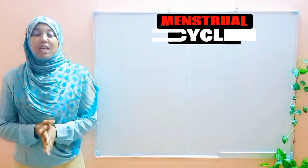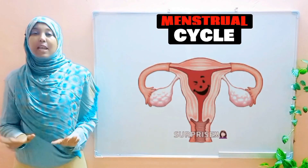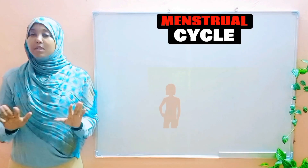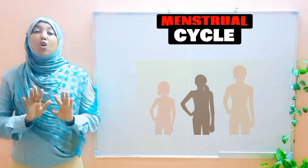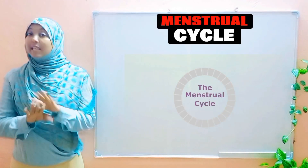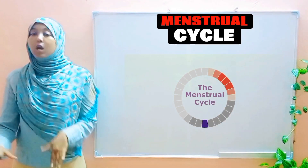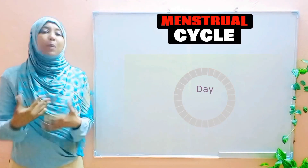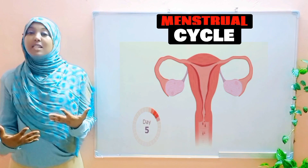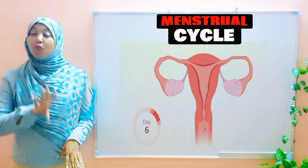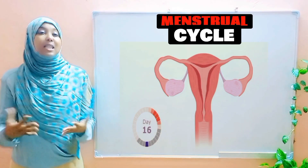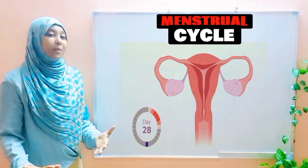The menstrual cycle is a cyclical event that happens in a female's body. On average, it takes about 28 days, but this can be longer or shorter depending on several factors. The cycle is divided into four phases according to the activities that happen in each phase, and they go in order.